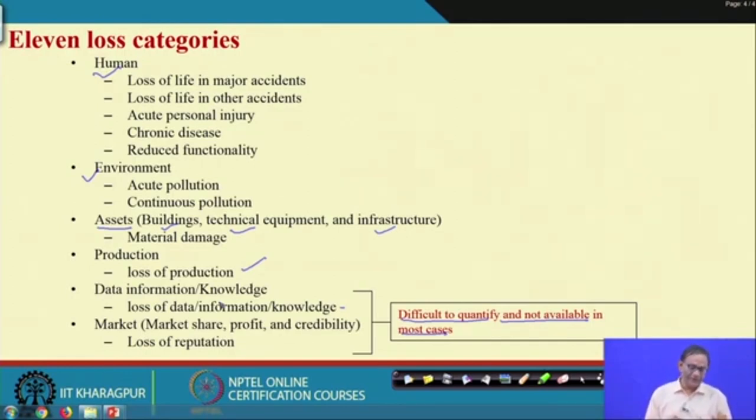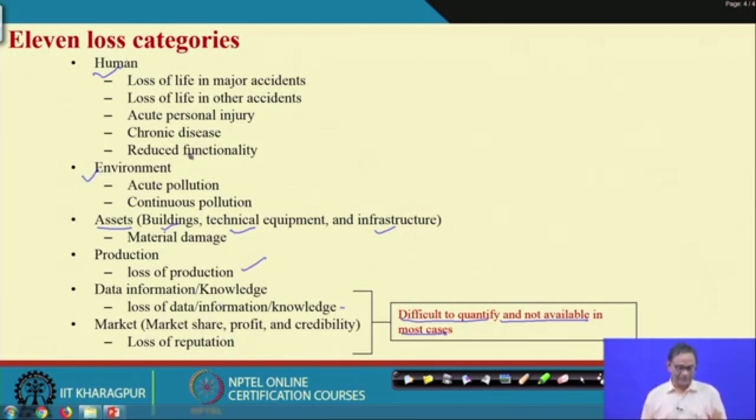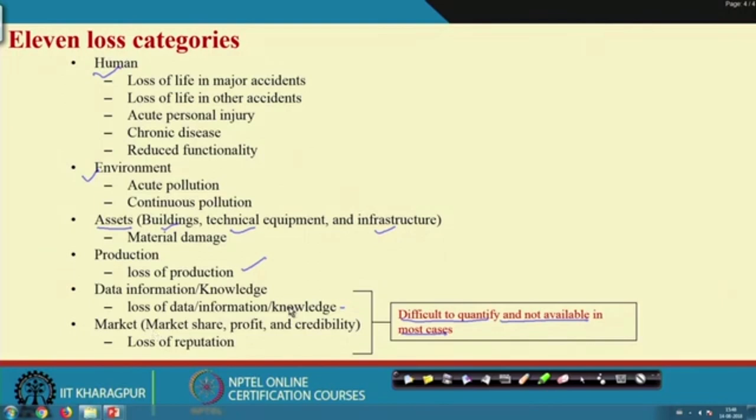My suggestion is that when you do a case study on loss calculation and try to find out the budget for safety, if you do not consider all the loss categories, you may find that the cost of accident is much less than it actually is. It is recommended that you consider all 11 categories of losses, find ways to calculate each, aggregate or sum up all those categories, and use the resultant loss for safety budgeting or cost-benefit analysis.